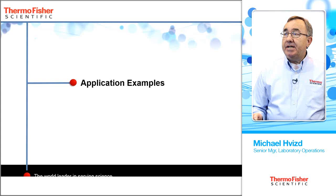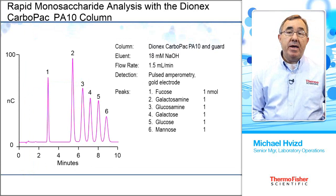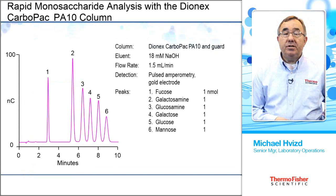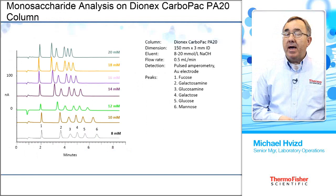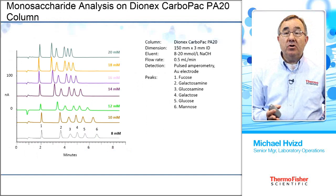Now let's go into some application examples. The first ones I want to show are classical separation techniques used for many years. Here we're using sodium hydroxide made up from 50% solution. This first example is the classical separation of the monosaccharides — we call this the mix of six, with two amino sugars in the group as well. This separation is very short, only about 10 minutes, running an isocratic eluent of 18 millimolar sodium hydroxide, using the Carbopac PA20 column.